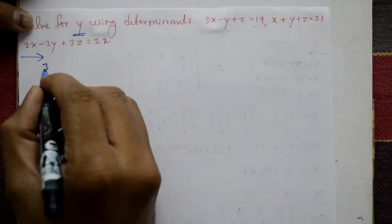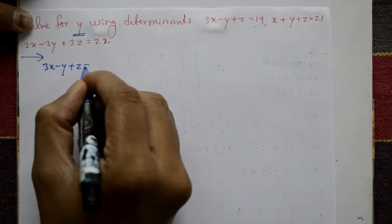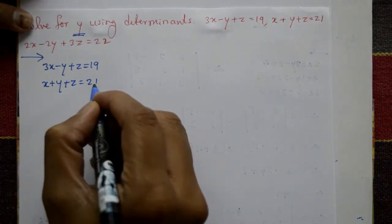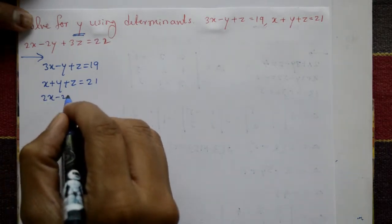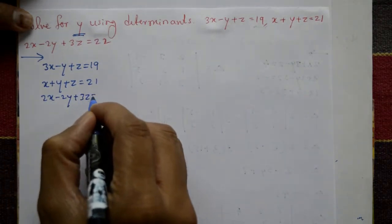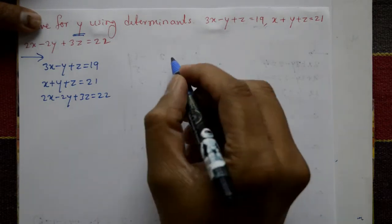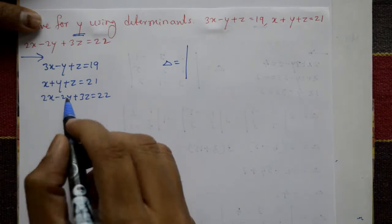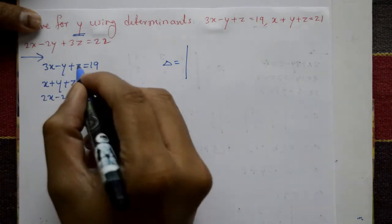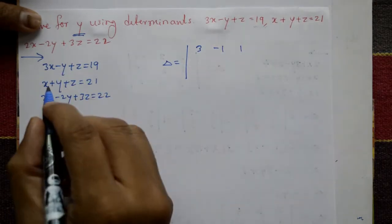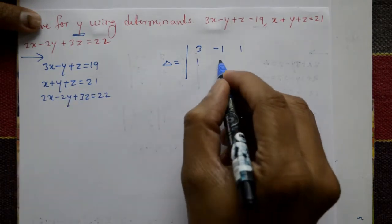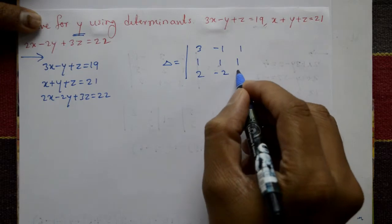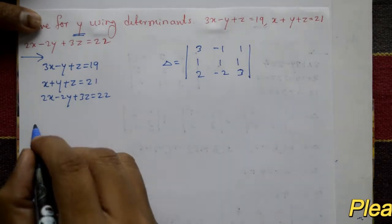First, write the equations: 3x minus y plus z equals 19, x plus y plus z equals 21, 2x minus 2y plus 3z equals 22. Now find Delta — the determinant of coefficients of x, y, and z from all three equations: the matrix is [3, -1, 1], [1, 1, 1], [2, -2, 3].